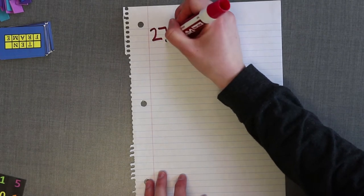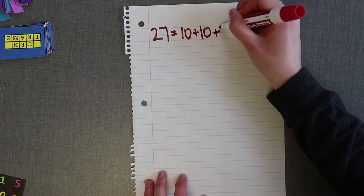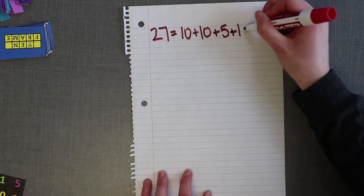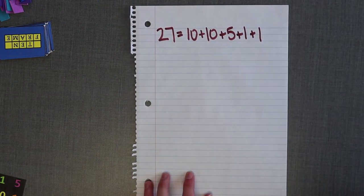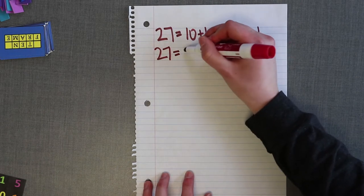For example, I draw 27. This number can be broken into two tens, one five, and two ones. It can also be broken into one ten, three fives, and two ones. There are also other ways to decompose 27.